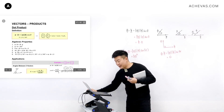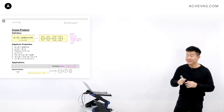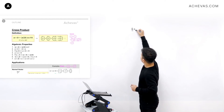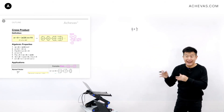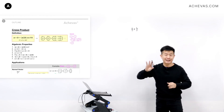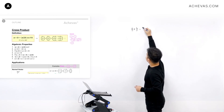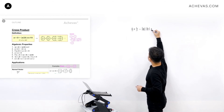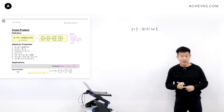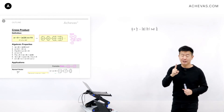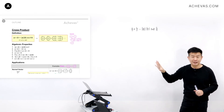Now we want to move on to vectors cross product. For vectors cross product, the notation is A cross B — just like the dot product, this is not arithmetic multiplication; it has to be pronounced as A cross B. A cross B is defined as modulus of A, modulus of B, sine theta, and n-hat. This n-hat is a unit vector defined as being perpendicular to both vector A and B at the same time.